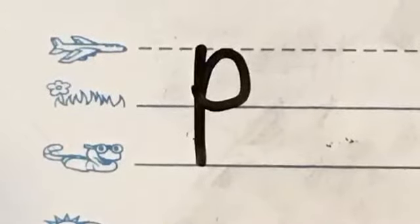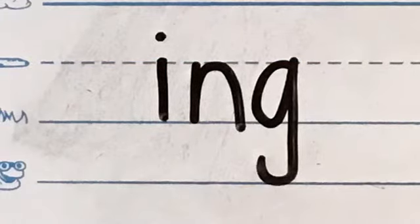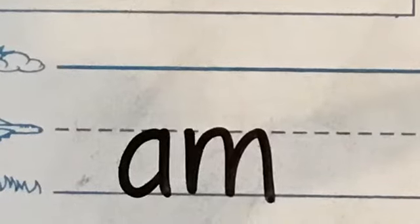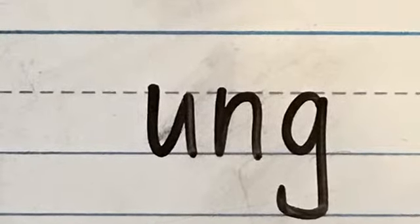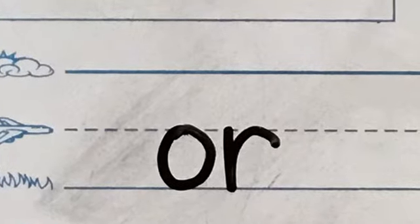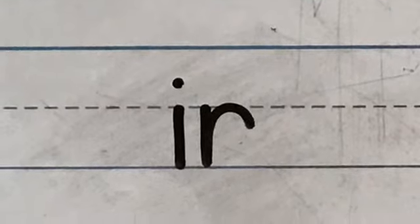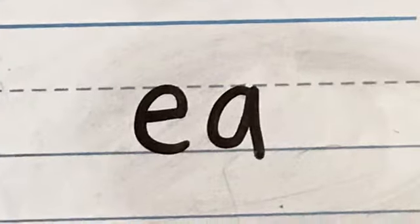P, pan. X, fox. Y, yellow, ing, ring. A, ham, am. U, lung, ung. O, horn, oar. I, bird, ur. E, A, eat, ee.